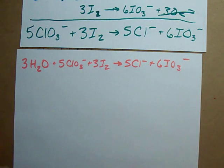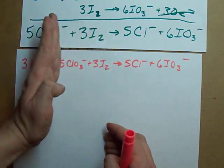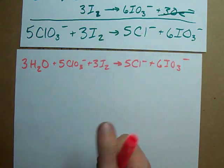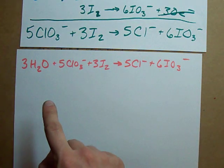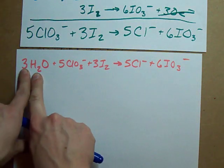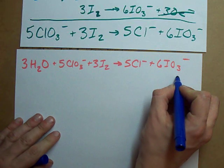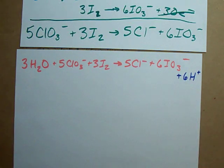3 Oxygens. And 5 Chlorates and 3 Iodines make 5 Chlorides and 6 IO3 minuses. So, now I've got 3 and 15 is 18 Oxygens on this side and 18 Oxygens on that side. Oxygen is balanced. The last thing we do is balance the H's by adding H+. Notice I have 6 H's on this side and I don't have any on this side. I need 6 H's on this side and I add them by adding H+.